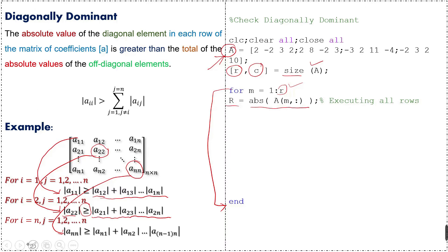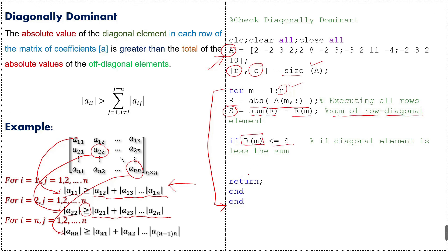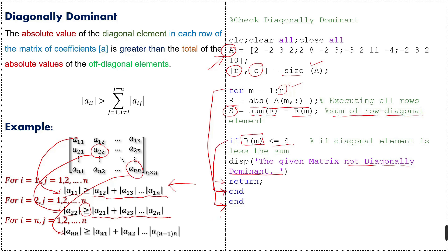In the next step we take s equal to the sum of elements in the row minus the diagonal element — so the sum of off-diagonal elements. Then if the diagonal element is less than or equal to this sum s, we display 'the given matrix is not diagonally dominant', use the return command, and close with end.